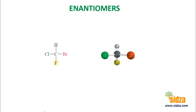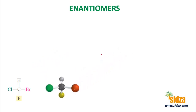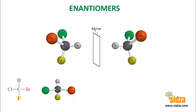Enantiomers — what are enantiomers? If you look at this tetrahedral molecule, the carbon with four different groups attached, this is the tetrahedral structure with carbon in the center and four different groups. If you look at this particular molecule through a mirror, you can see the compound and its mirror image — this is the object, this is the molecule, and this is its mirror image. These two compounds will be non-superimposable.